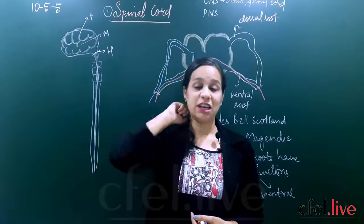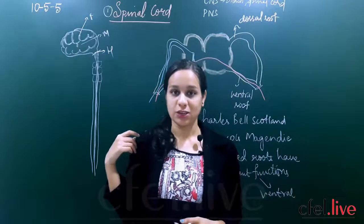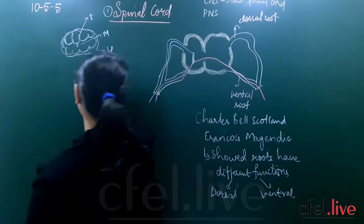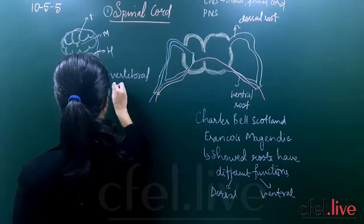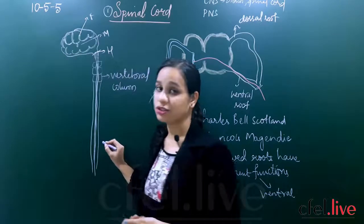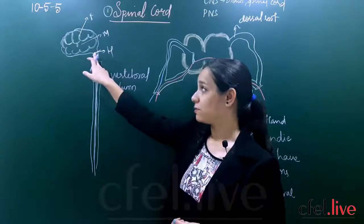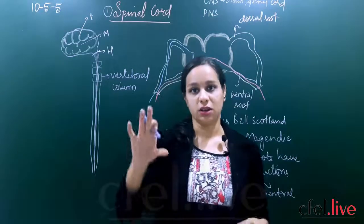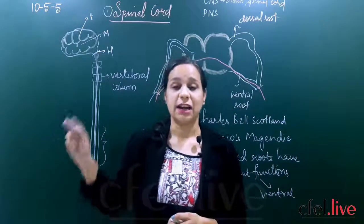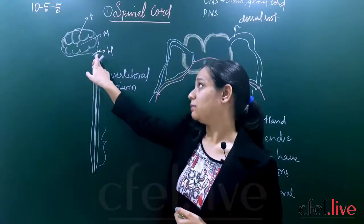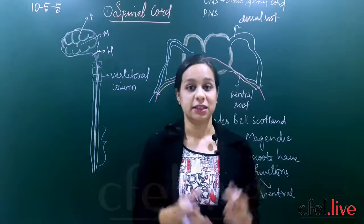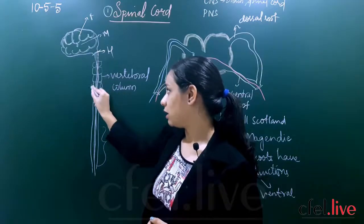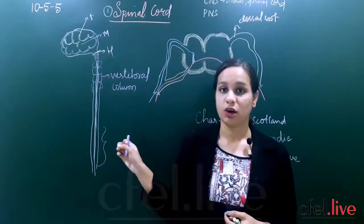If you touch behind your back, you can feel the spinal cord. This spinal cord has been covered with a skeletal structure called the vertebral column. It originates from the hindbrain, extends up to the lumbar region — which is your back down to your hip region — starting from the medulla oblongata and protected by the skeletal system called the vertebral column.